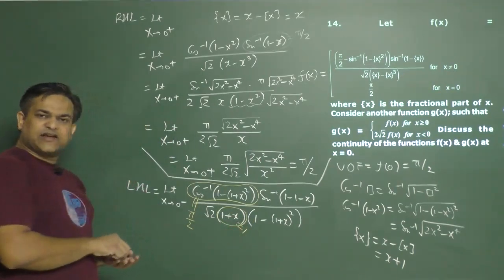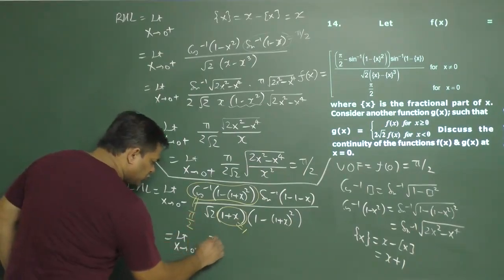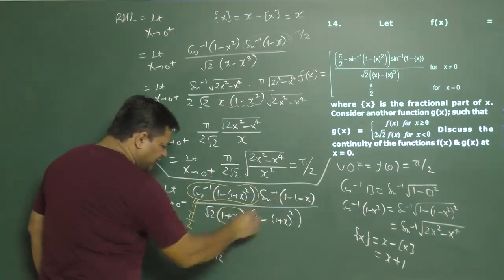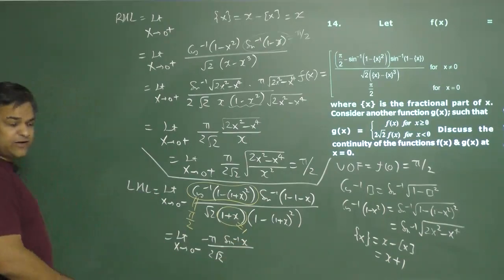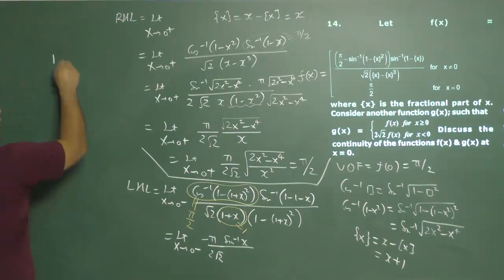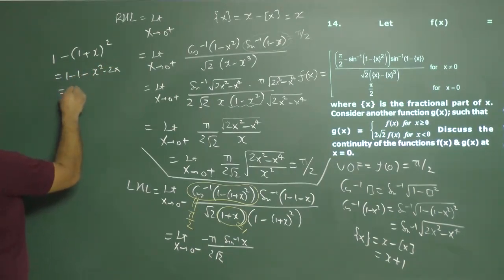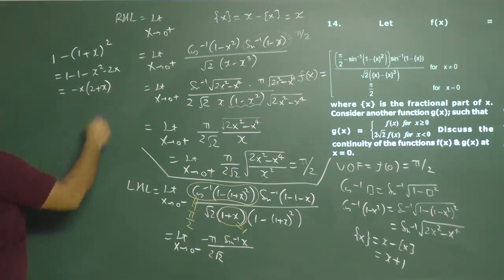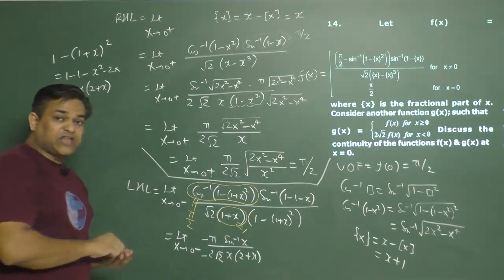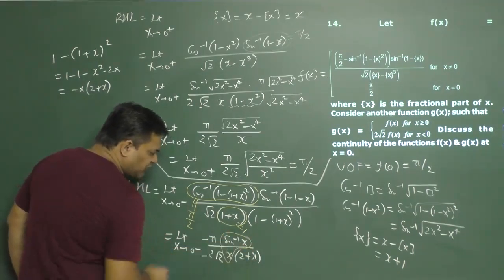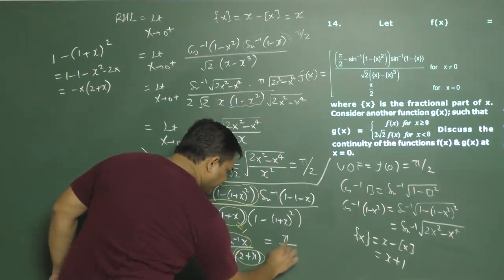Let's simplify directly. The limit x approaches 0 minus gives π/(2√2) in front. The numerator has sin⁻¹(−x) which gives −sin⁻¹(x). Opening 1 − (1+x)² gives 1 − 1 − x² − 2x = −x² − 2x = −x(2+x). Taking −x outside, sin⁻¹(x)/x approaches 1 as x→0, and (2+x) approaches 2. So this gives π/(2√2) times 1/√2 times (1/2) ... The left-hand limit evaluates to π/(4√2).